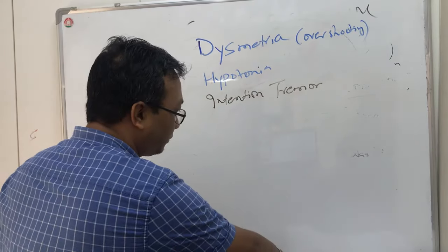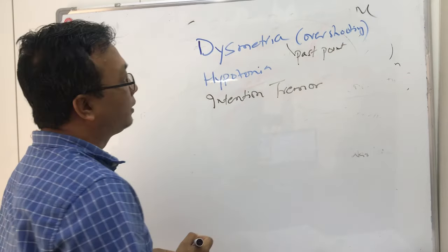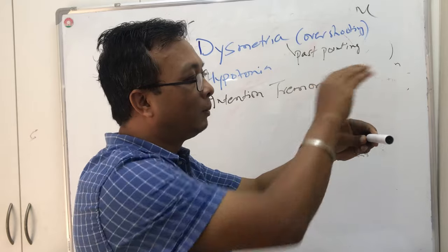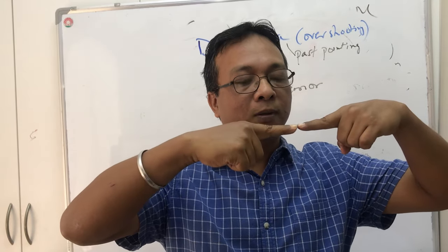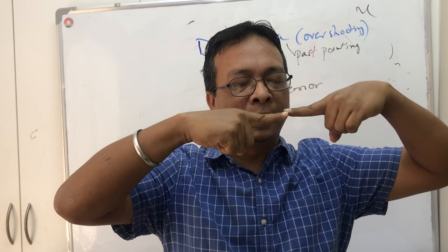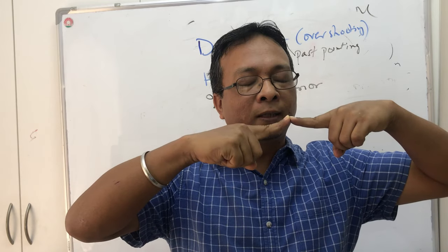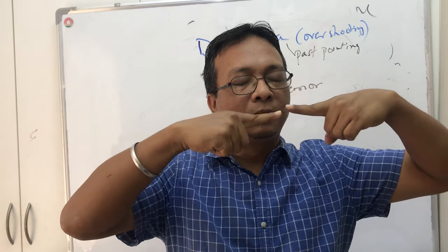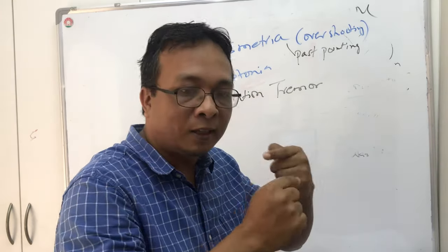This overshooting is also called pass pointing - you go past the target. The best example is asking someone to close their eyes and touch two fingers together. First time they may miss it, but after one or two attempts the cerebellum corrects it. When there is a cerebellar disorder, the person cannot make this correction - they keep missing. So whenever there is a cerebellar disorder, pass pointing will be present and they cannot correct that movement.